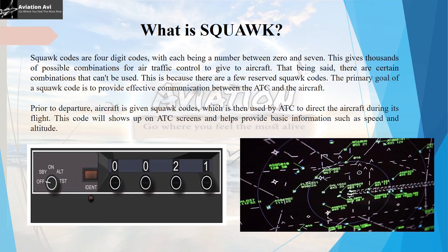Squawk codes are four-digit codes with each digit being a number between 0 to 7. This gives thousands of possible combinations for ATC to assign to an aircraft. However, there are certain combinations which cannot be used, because they are reserved for special situations.